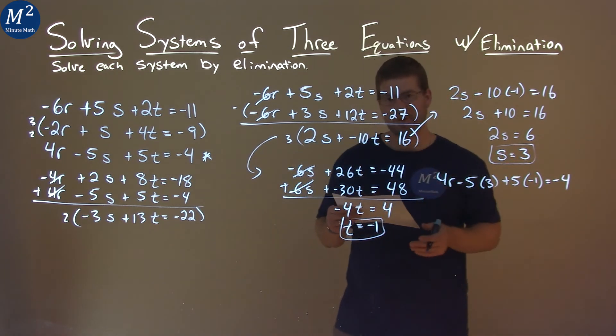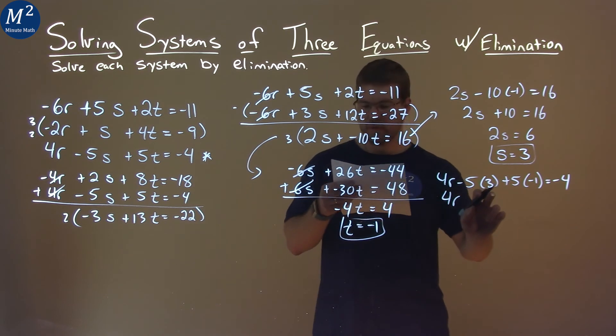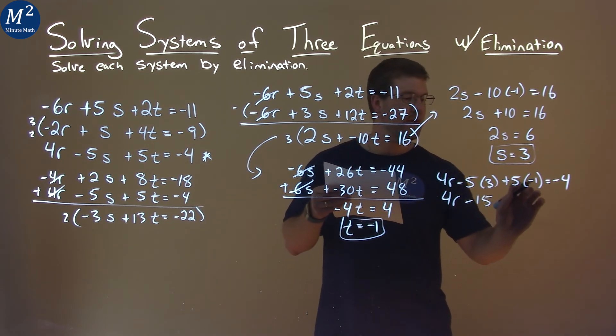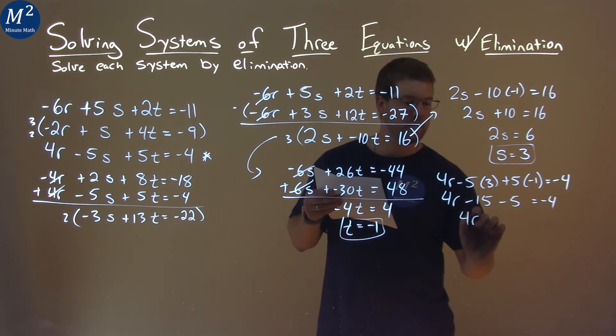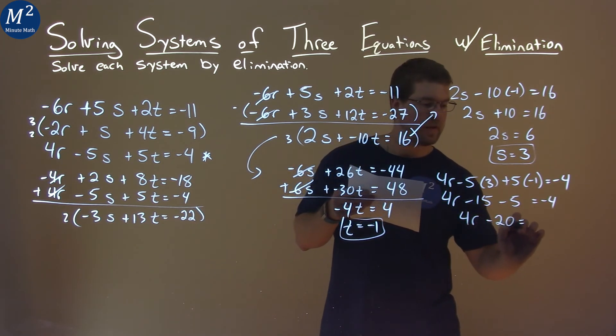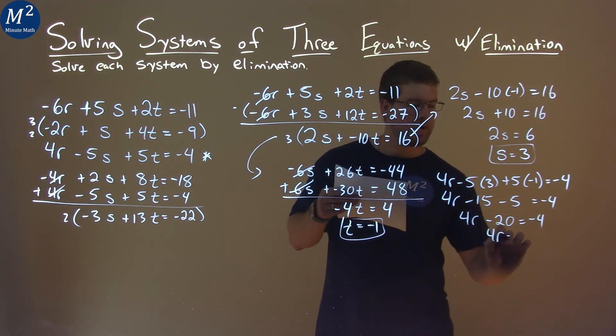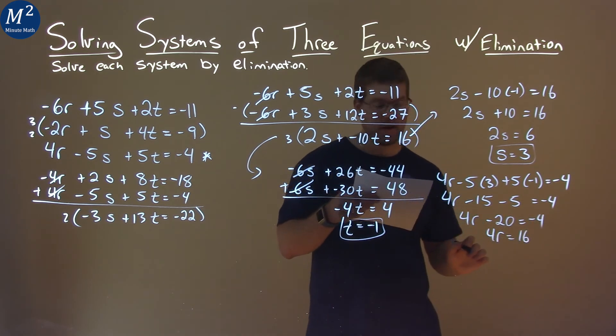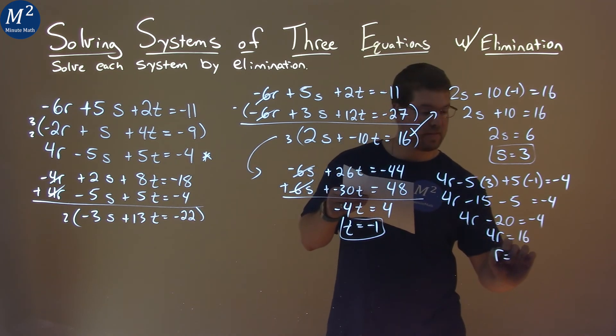Now we have to solve for r. So we have 4r here, 5 times 3 is negative 15, and then 5 times negative 1 is negative 5, equals negative 4. 4r comes down, negative 15 minus 5 is negative 20, equals negative 4. Add 20 to both sides, 4r equals 16, positive 16. Divide both sides by 4, and r is by itself, and that's equal to 4.